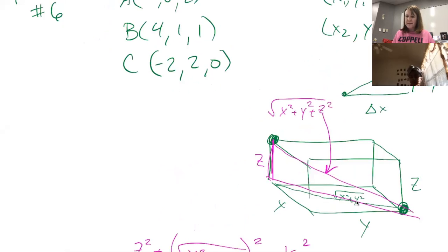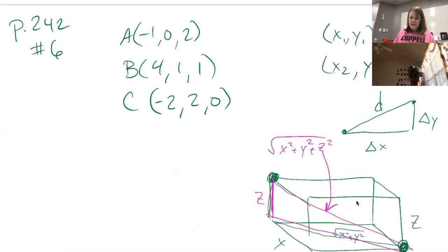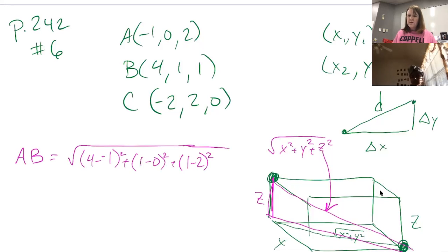That's basically what we're using here, but instead of using just x, y, and z, you want the difference, the change in. If you're trying to find the length of AB, then we'll say that's the square root of 4 minus negative 1 squared plus 1 minus 0 squared plus 1 minus 2 squared. That makes sense.